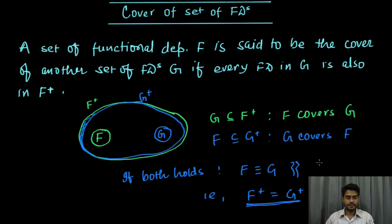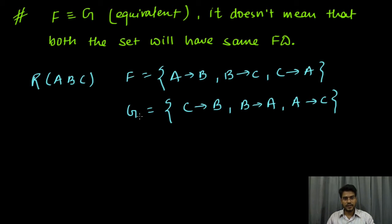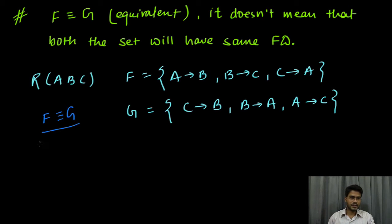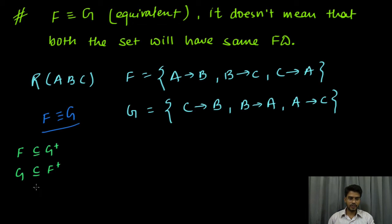Let us understand this with an example. We have two sets of functional dependencies f and g for a relation r which has attributes a, b, c. If you observe, we do not have any common functional dependencies between f and g, but if we solve we can find out that f and g are equivalent. The procedure to solve is: first find out if f is a subset of g plus, and also find out if g is a subset of f plus. If both conditions hold then we say that f is equivalent to g.